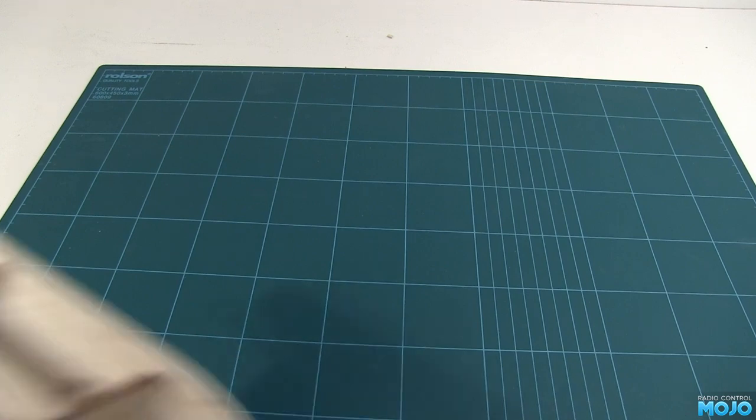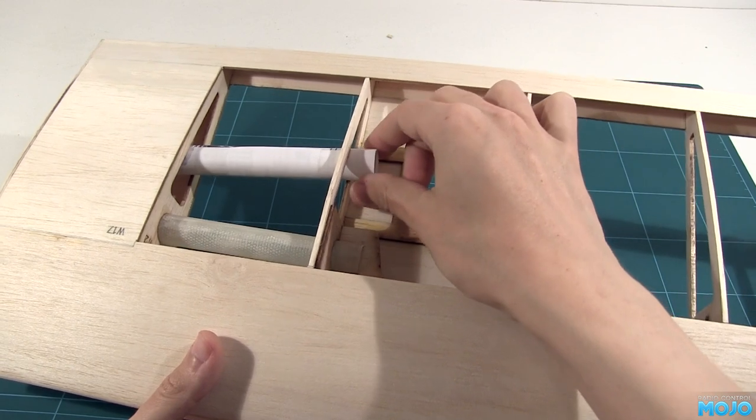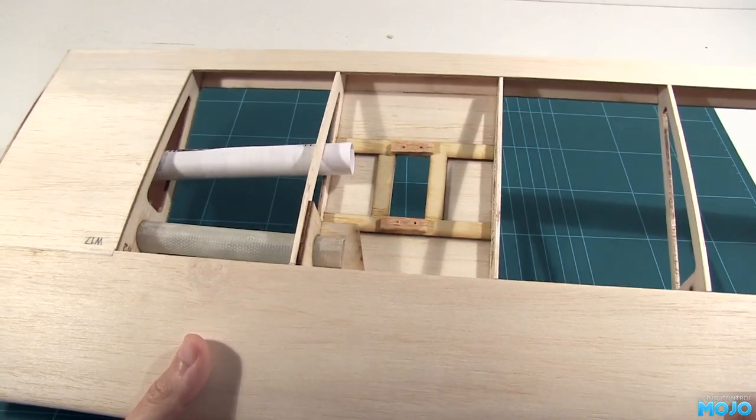First on today's list are the wings. I've rolled up some paper tubes to run the servo wires down. It makes it much easier to fish the wires through.